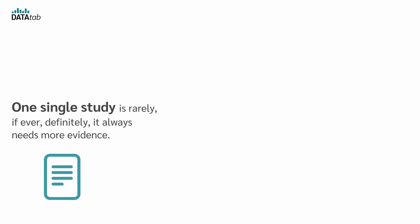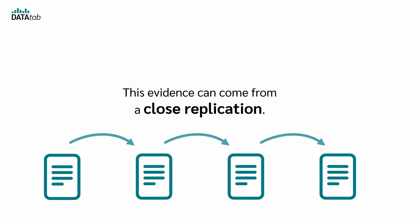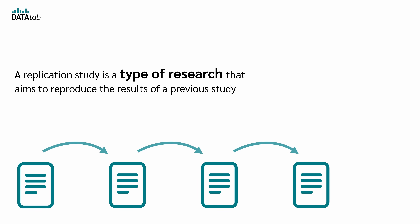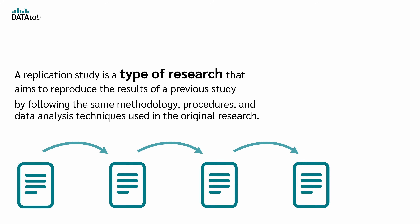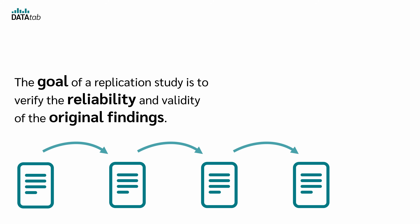Solution 2: Do replication studies. One single study is rarely, if ever, definitive — it always needs more evidence. This evidence can come from a close replication. A replication study aims to reproduce the results of a previous study by following the same methodology, procedures, and data analysis techniques used in the original research. The goal is to verify the reliability and validity of the original findings. For example, if a study finds that a specific drug reduces symptoms of depression, a replication study would test the same drug under similar conditions among a new group of participants, measuring outcomes using the same methods. The replication study's results are then compared to the original, and the replication study can be used in a meta-analysis.